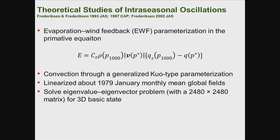The evaporation-wind feedback is parameterized using an equation involving a coefficient, the 1000-millibar density of air, wind speed at near-ground level, and the difference between the saturated specific humidity and the specific humidity close to the ground. For convection, they use a generalized Kuo-type parameterization to represent convection in the model.